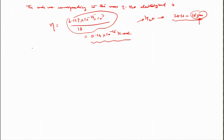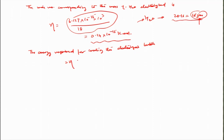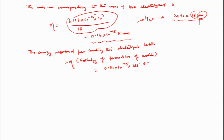Let us calculate the energy required for making the electrolysis bubble. The energy required is the mole number times the enthalpy of formation of water: 0.34×10⁻¹⁵ kmol × 285.83 kJ/kmol = 97.2×10⁻¹² joules. This is the amount of energy needed to electrolytically formulate the bubble in the particular channel.